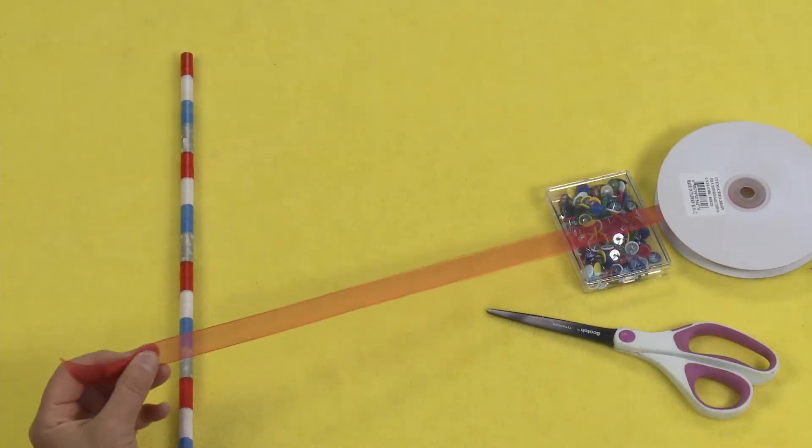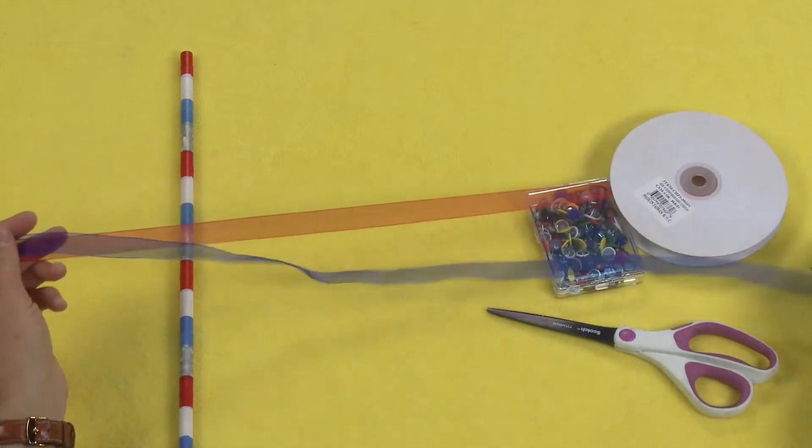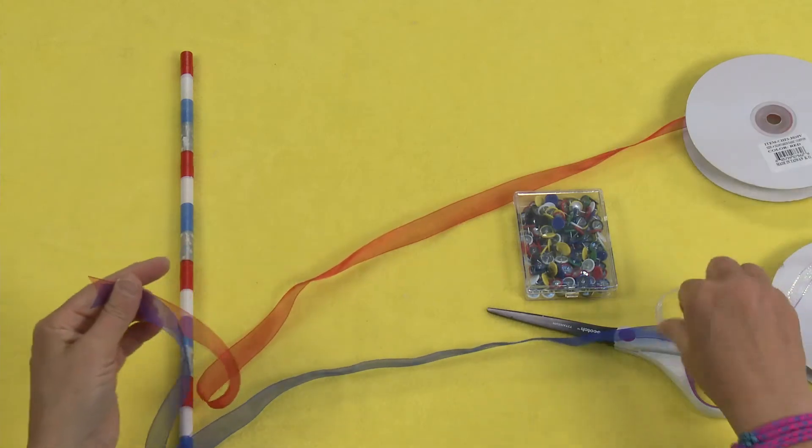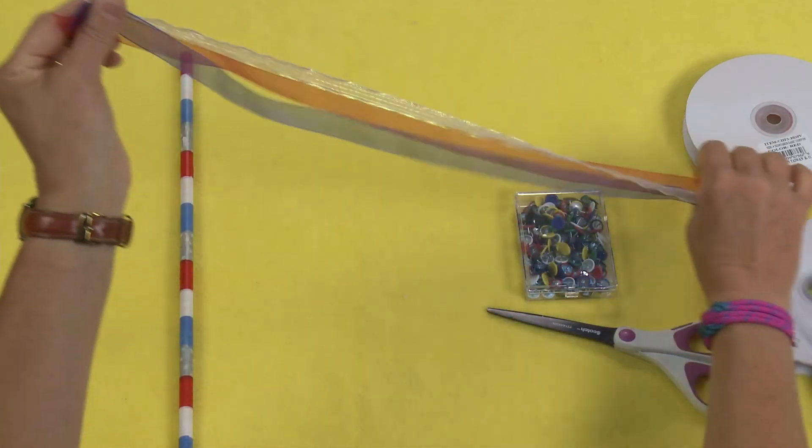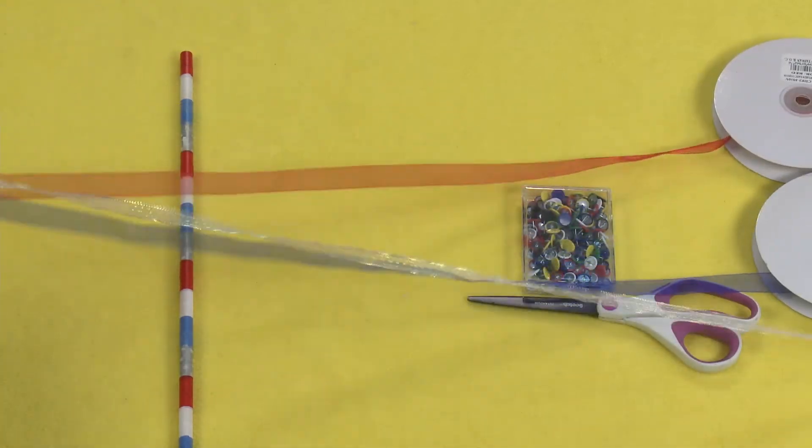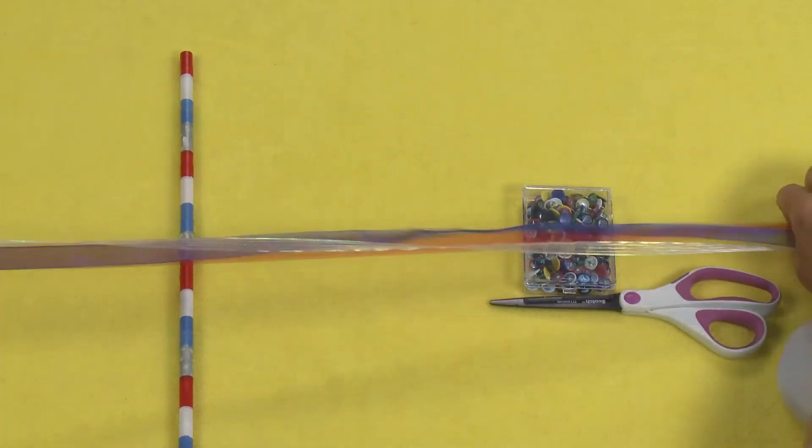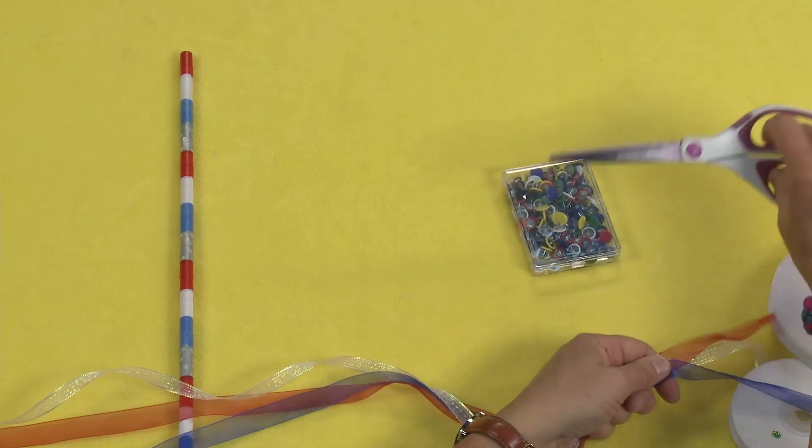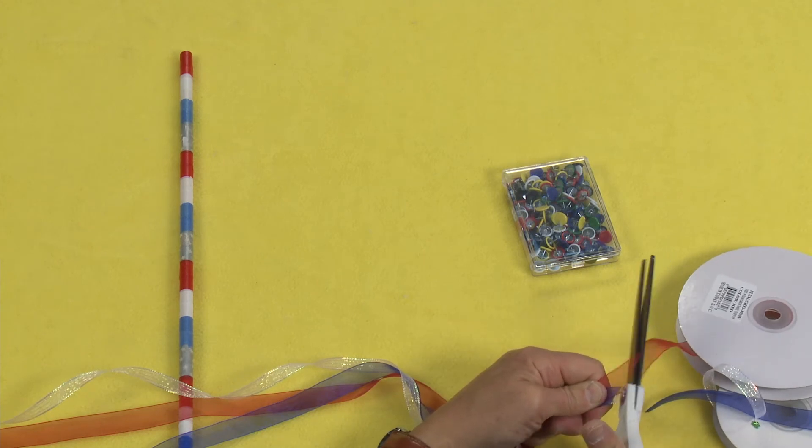And then you want to take some ribbon. Now I love using the chiffon ribbon just because the chiffon ribbon just floats. It's just really beautiful. But you can use whatever kind of ribbon you want. You could even use mylar ribbon if you wanted to. That would be pretty fabulous. I like to give myself at least two feet, more like a yard of ribbon just to give it a nice flow. So that's about a yard of ribbon there. And just take your scissors and cut it on a diagonal so you get that pretty diagonal going.